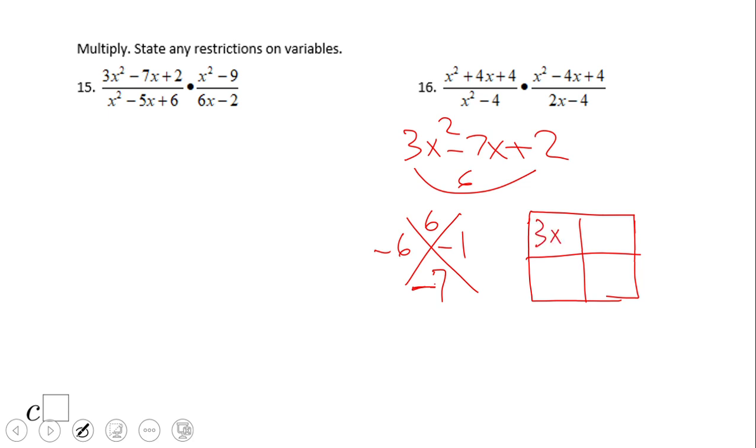I'm going to use the box method now to factor out. We have 3x squared here, negative 6x and negative 1. Now I'm going to look at the GCF, the greatest common factor for each row and each column. We're going to have x here and 2 here, 3x here the GCF.